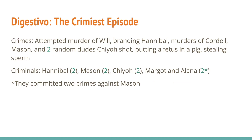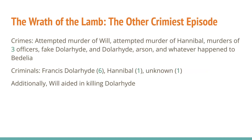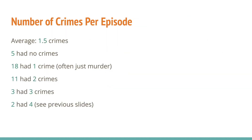Digestivo is the crime-iest episode. The crimes were the attempted murder of Will, branding Hannibal, murders of Cordell, Mason, and two random dudes Chio shot, putting a fetus in a pig, and stealing sperm. Criminals who each committed two of those crimes were Hannibal, Mason, Chio, and Margot and Alana as one, because they committed two crimes against Mason together. The Wrath of the Lamb is the other crime-iest episode, with crimes of attempted murder of Will, attempted murder of Hannibal, murders of three officers, fake Dollarhyde and real Dollarhyde, arson, and whatever happened to Bedelia. The average number of crimes per episode was 1.5: five had no crimes, eighteen had one crime (usually just murder), eleven had two crimes, three had three crimes, and two had four.